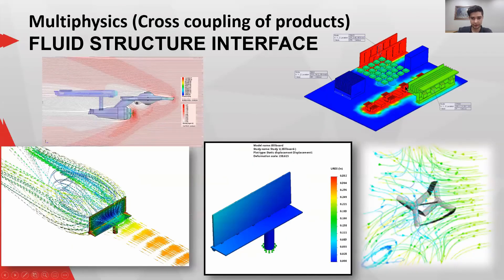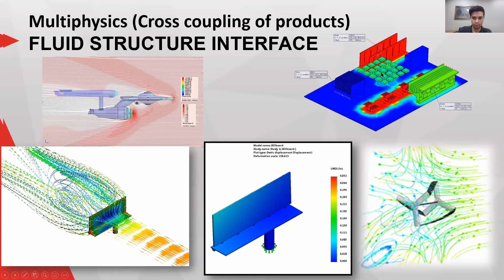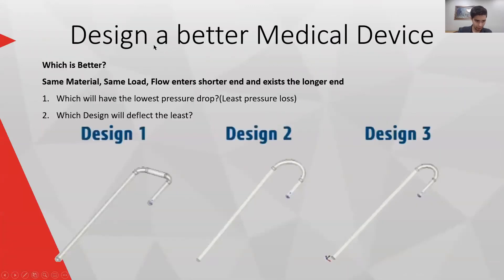Some further examples are actually multi-physics studies. For this billboard, we did a flow simulation and then pulled the pressures into a static analysis to see the deflection. In another example, we took thermal results and did a thermal-static stress analysis — checking whether expansion at joints is acceptable and whether heat sinks might lift off components. These are combined flow-FEA studies.